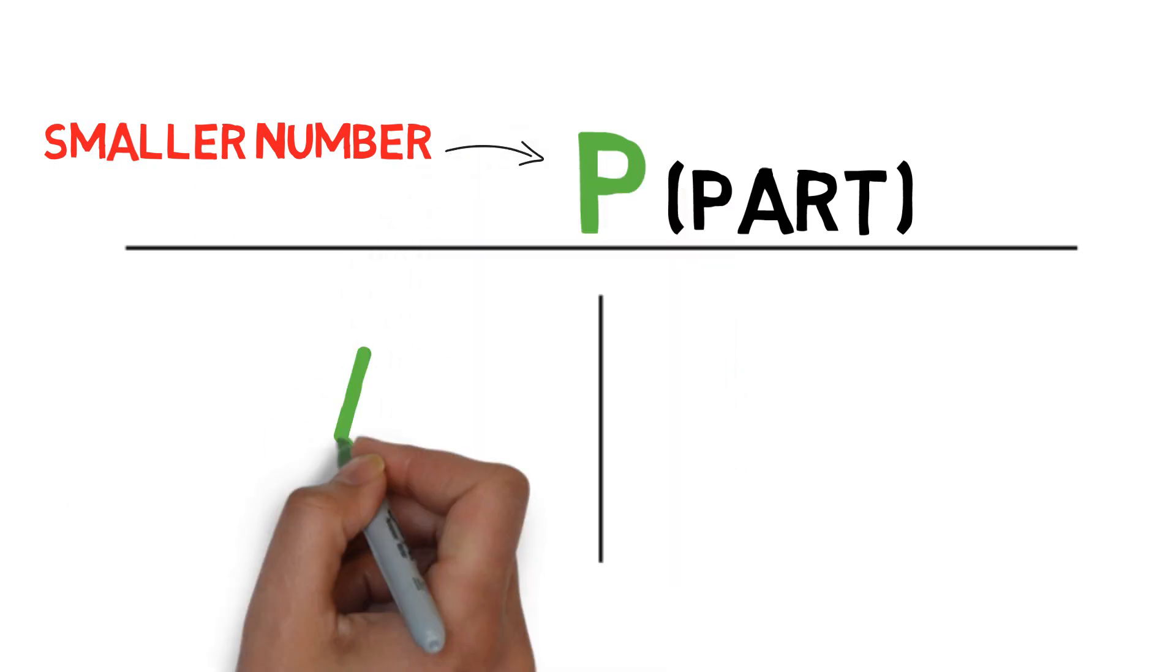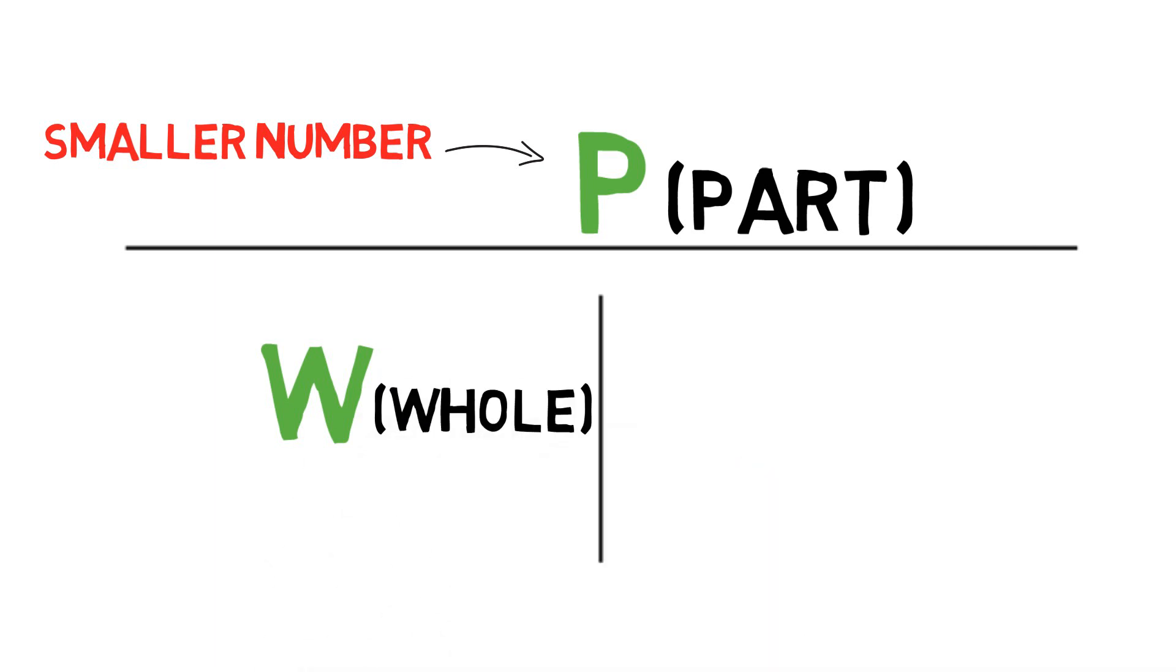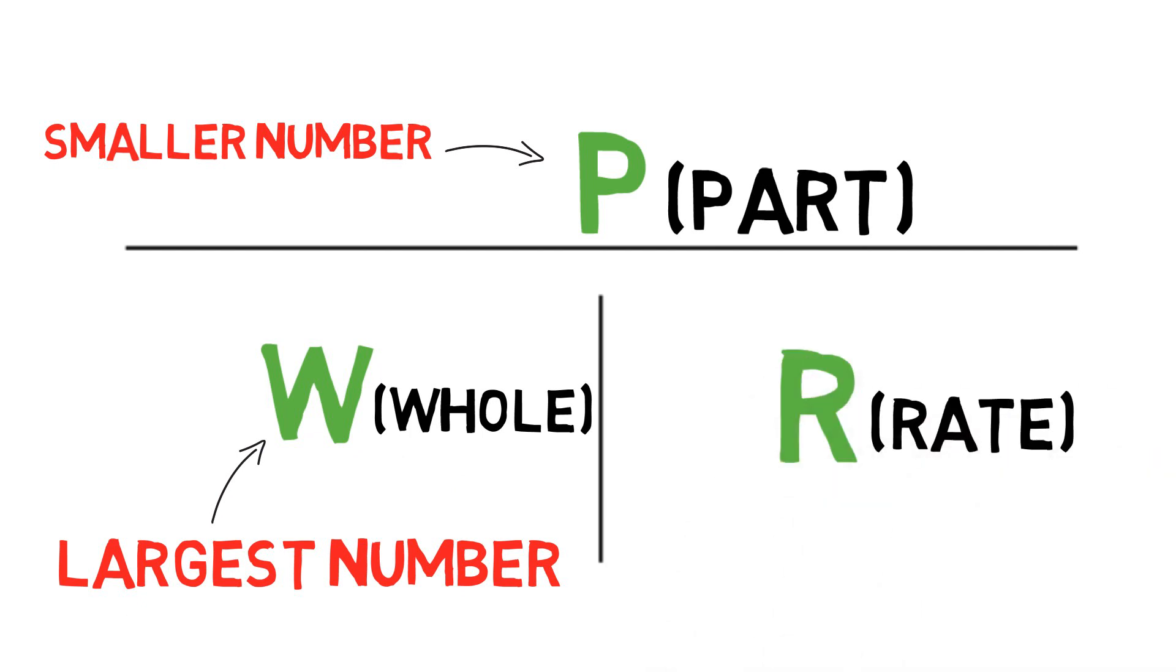The W stands for the word whole, which goes on the bottom left in our T. That is always the largest number you'll have in the problem. The R in the word power stands for the word rate, which always will be in the bottom right of our T, and that is always a percentage.